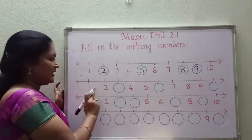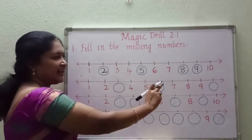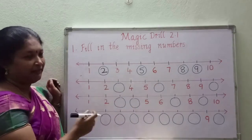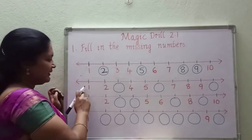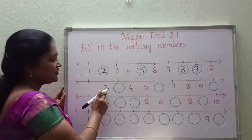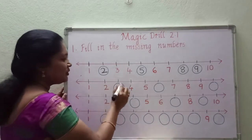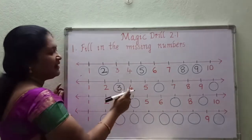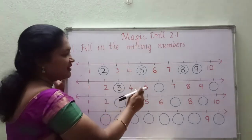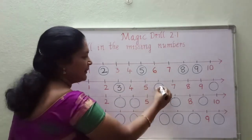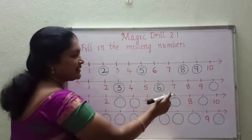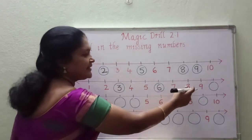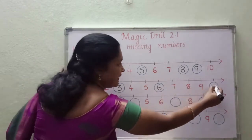See the next number line. Here also they gave some numbers and some missing numbers — you have to fill that. Let us see: 1, 2. What will come next? 3, 4, 5, 6, 7, 8, 9, 10.